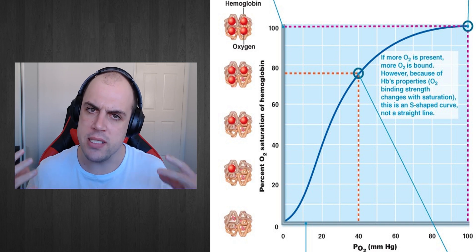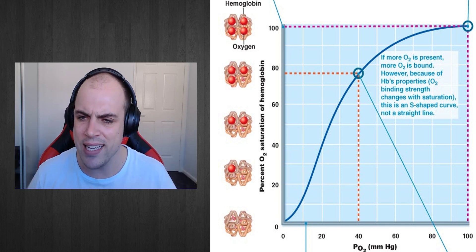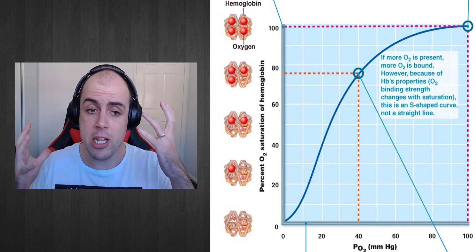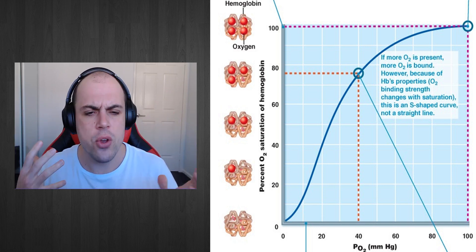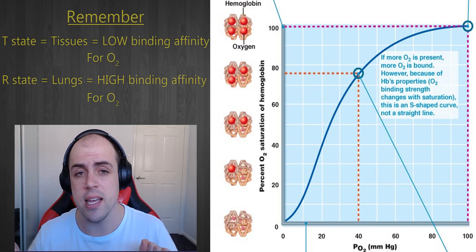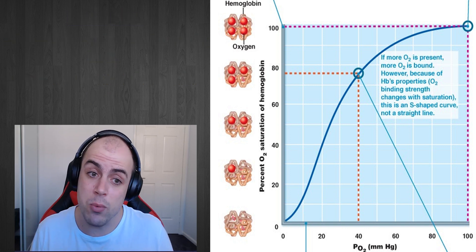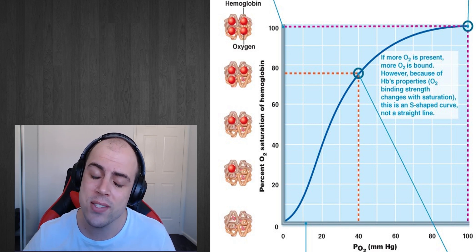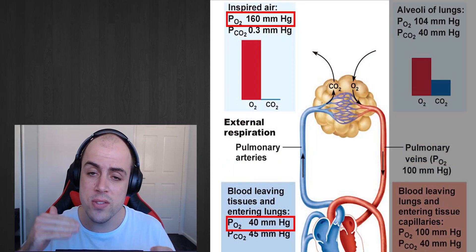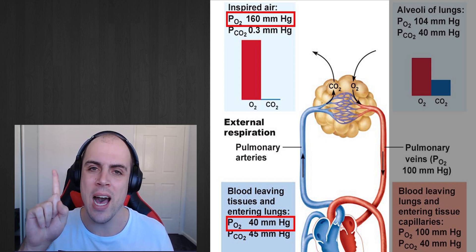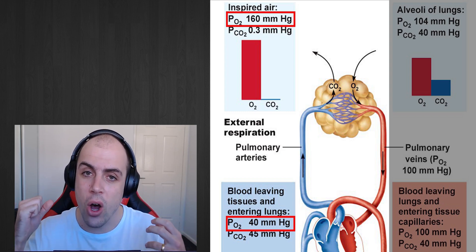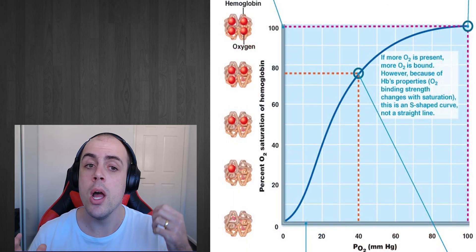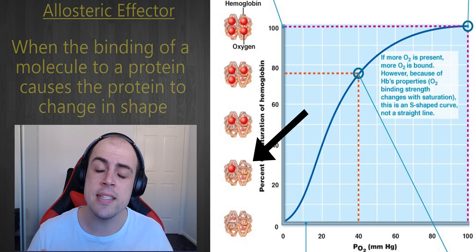What we see with hemoglobin is that it starts very much in its T-state with no oxygen molecules bound, and its binding affinity is very low. It's essentially like throwing spaghetti at a wall to see what sticks — we're throwing oxygen at the hemoglobin molecule to see what binds. As we move towards the lungs, the partial pressure of oxygen goes up, meaning there's a greater chance that an oxygen molecule will hit the hemoglobin protein just right and bind to one of those four binding sites.